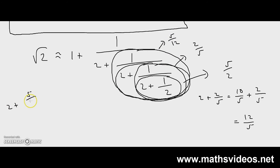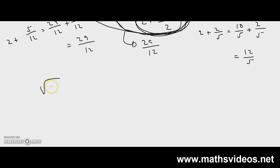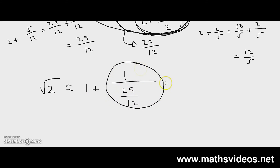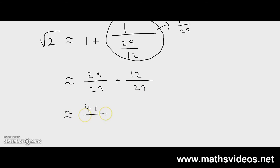2 plus 5 over 12 is 24 over 12 plus 5 over 12, which is 29 over 12. So we know that this entire value over here is 29 over 12. So what we have at the moment is the square root of 2 is approximately 1 plus 1 over 29 over 12. Now, 1 over 29 over 12 is in fact 12 over 29. So the square root of 2 is approximately 1 plus 12 over 29, which is approximately 41 over 29.